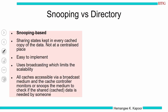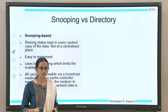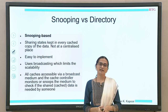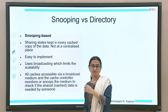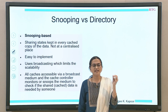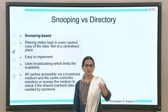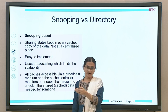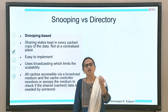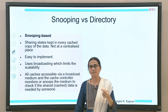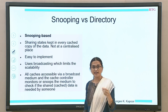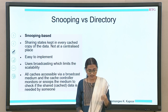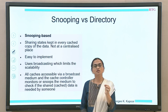In snooping cache coherence protocols, as the word 'snoop' suggests, the sharing state of a particular block is identified by every processor on its own. Every processor's cache controller looks outside its domain to see what is happening on the global interconnect or a bus. The cache controller keeps watching what is happening on the bus, and whenever a write or read happens to a shared variable, it passes through this bus.